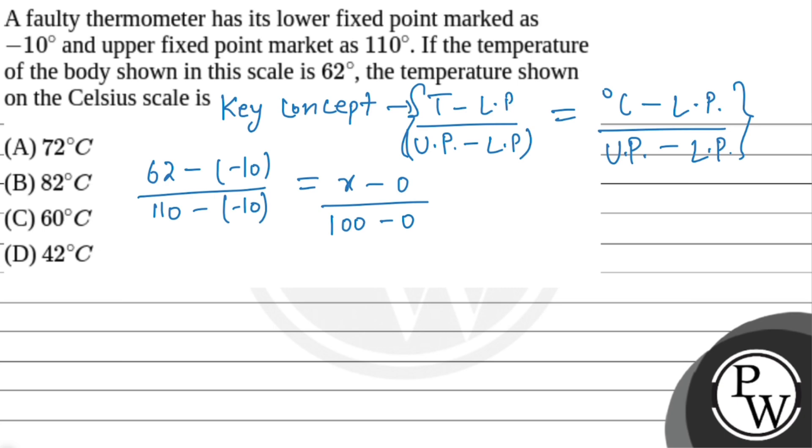So, it will be 62 minus minus 10, it will be plus 10. So, 72 upon 120 equals x upon 100.